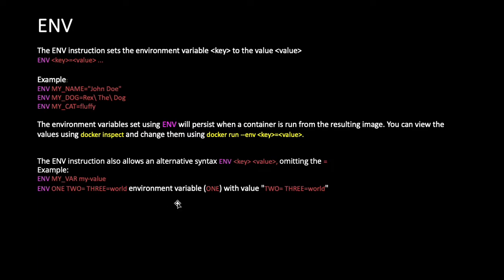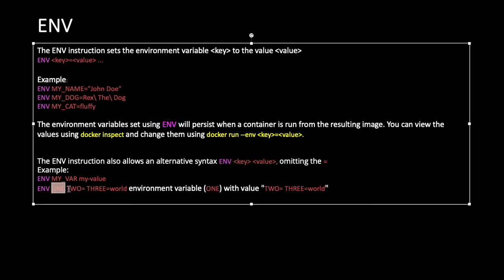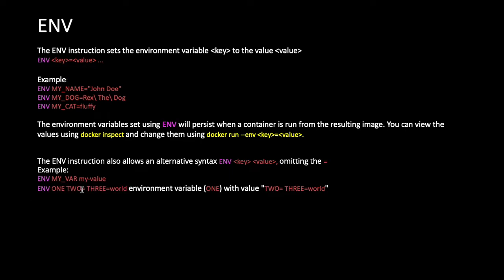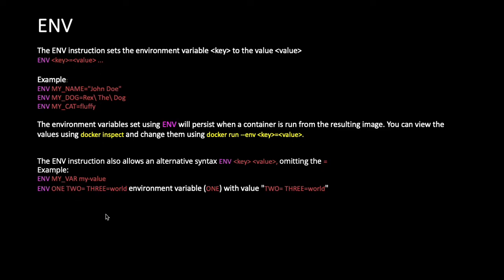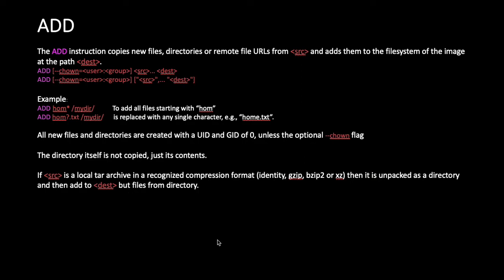The overridden value will be used by the container. ENV also allows alternative syntax omitting the equals sign — for example, ENV my_var my_value. In this form, the key is the first word and the rest is considered the value. Multiple variables can be defined, and it doesn't matter whether you use equals or space-separated format.